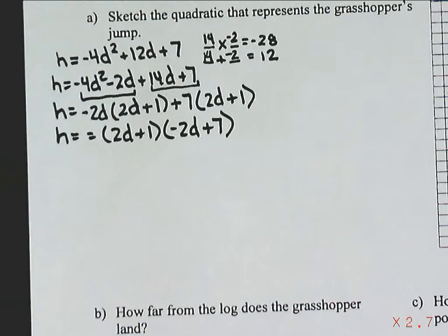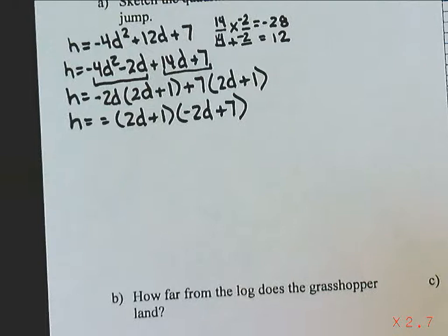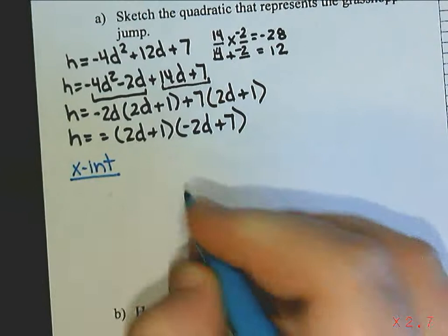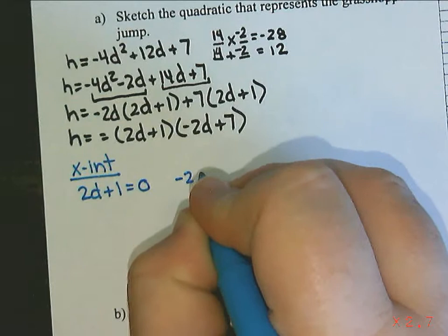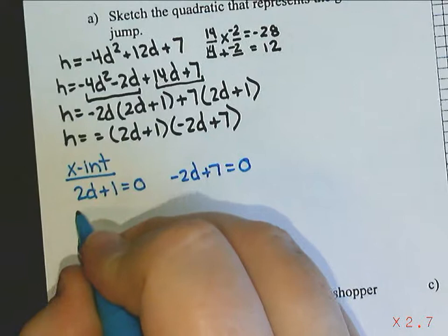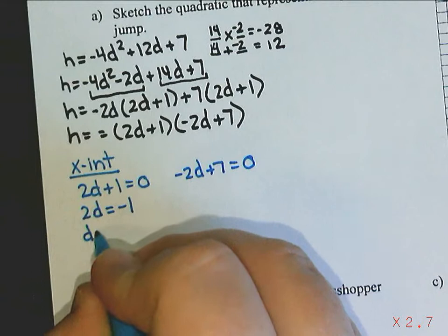So to sketch this, what we need to do is we need to find the x-intercept, the y-intercept, and the vertex. So to find the x-intercepts, what we do is we look at the factored form, and we take each bracket and figure out what makes it equal 0. So 2d plus 1, make that equal 0, and negative 2d plus 7, make that equal 0. So here we're going to subtract 1 to the other side to get 2d equals negative 1, and then divide both sides by 2, which is going to give me negative 1 half.